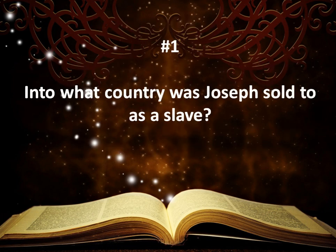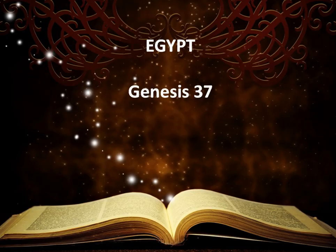Into what country was Joseph sold as a slave? The answer would be Egypt. His brothers sold him. Genesis 37 is where you can find that.